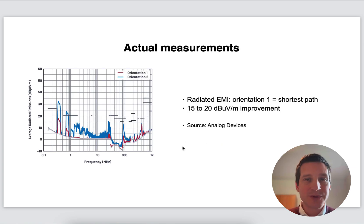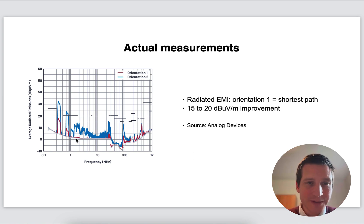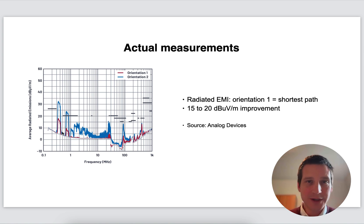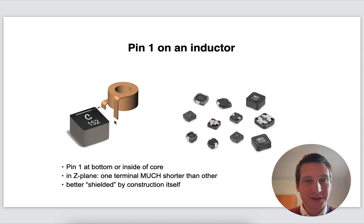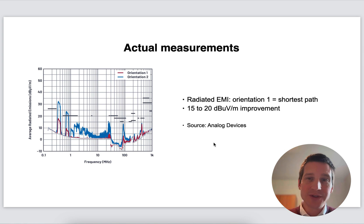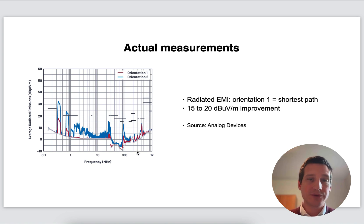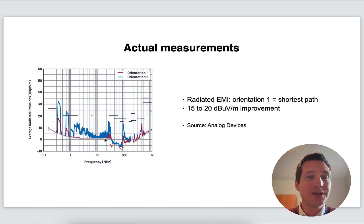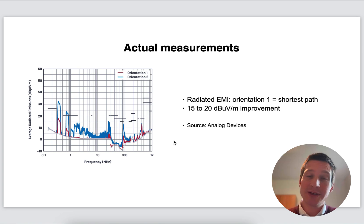Looking at actual measurements — from a paper from Analog Devices — you can see how big the difference is. The red line shows the correct orientation of the inductor, with pin 1 very close to the switching part. The blue line shows the inductor turned 180 degrees, connecting the switching node to the worst terminal. The radiated EMI on orientation one (red) is much lower, because you have that shorter path and less antenna effect. We see 15 up to 20 dB of improvement — that's a big difference, and it could be the make-or-break in your EMI and EMC certifications.